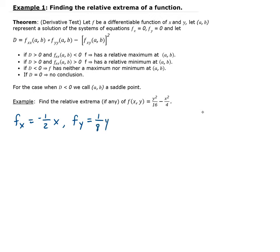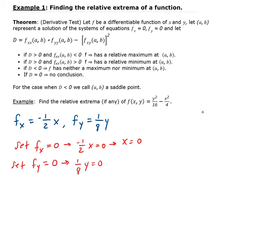Now we're going to set each of these equal to 0. So negative one-half x equals 0 gives us x equals 0. And setting the partial of f with respect to y equal to 0 gives us y equals 0. So there's our critical value.